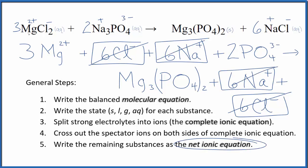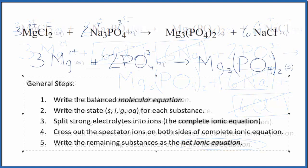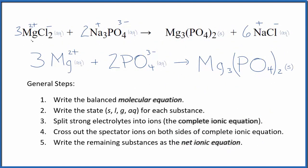What's left, that's the net ionic equation for MgCl2 plus Na3PO4. I'll clean this up and write the states. We'll have our net ionic equation. So this is the balanced net ionic equation for magnesium chloride plus sodium phosphate.